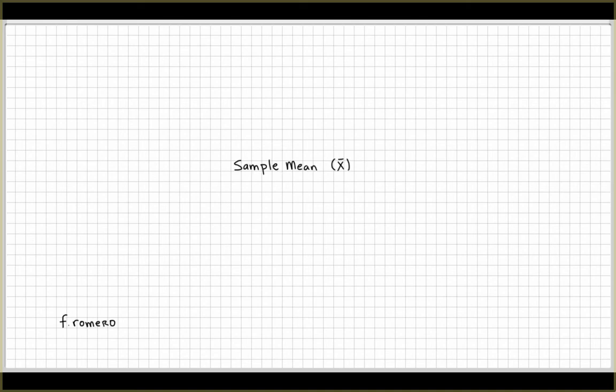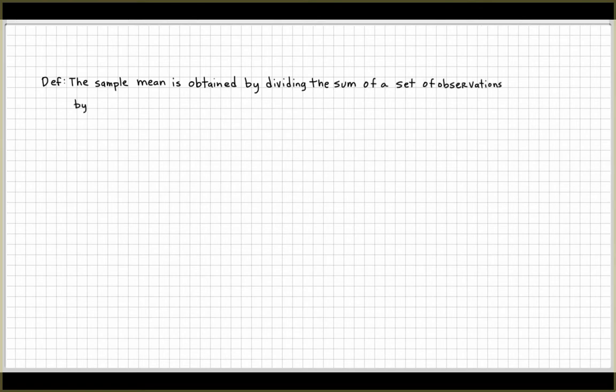In this video we're going to talk about the sample mean. Definition: The sample mean is obtained by dividing the sum of a set of observations by the number of observations in the set.